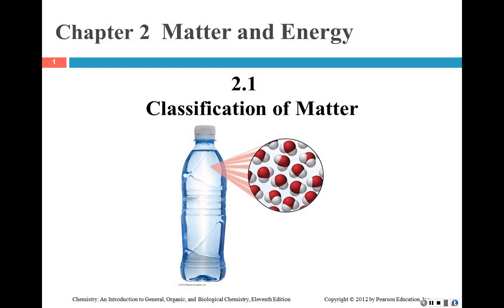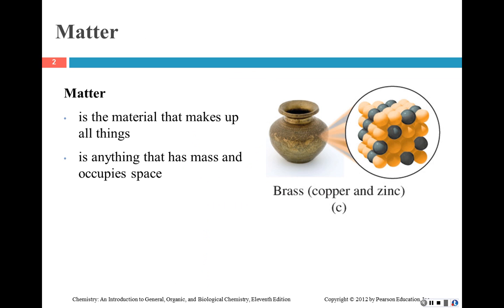In Section 2.1 we're going to look at classification of matter. Matter is basically anything that takes up space and has mass. The things you can see around you are matter, and the things that are too small for us to see are also matter — they make up the larger things that we can see.